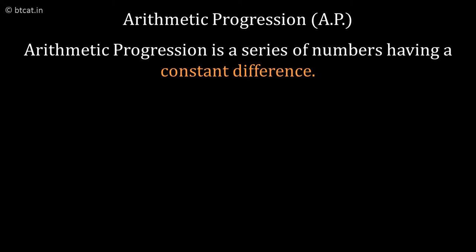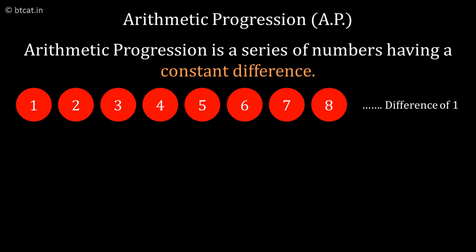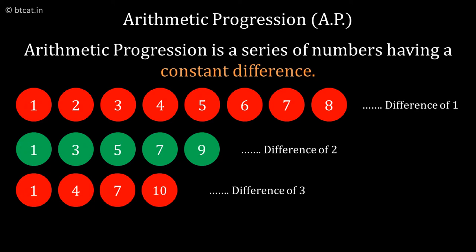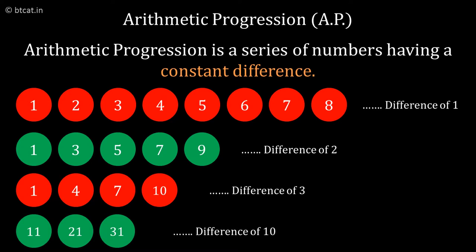So I can have 1, 2, 3, 4, 5, 6, 7, 8. I can have 1, 3, 5, 7, 9. I can have 1, 4, 7, 10. I can have 11, 21, 31 with common difference of 10 and so on.